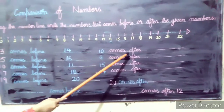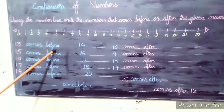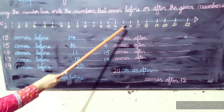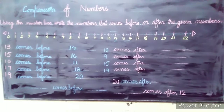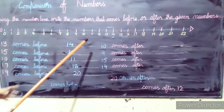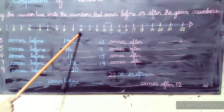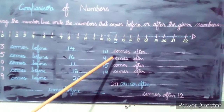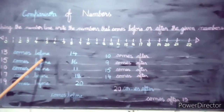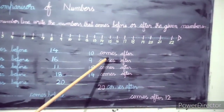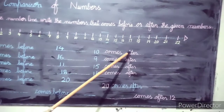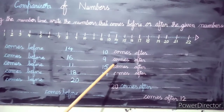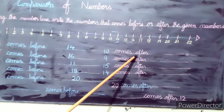Now, 10 comes after — the number before it is below. Students, we have completed the 'before' section. Now we have questions that are 'after'. Do not get confused — but 10 comes after.